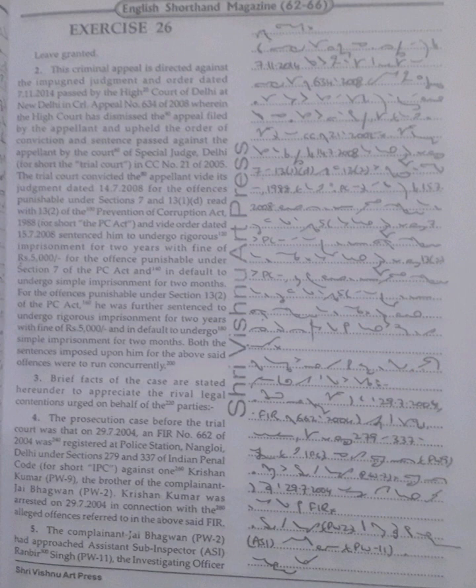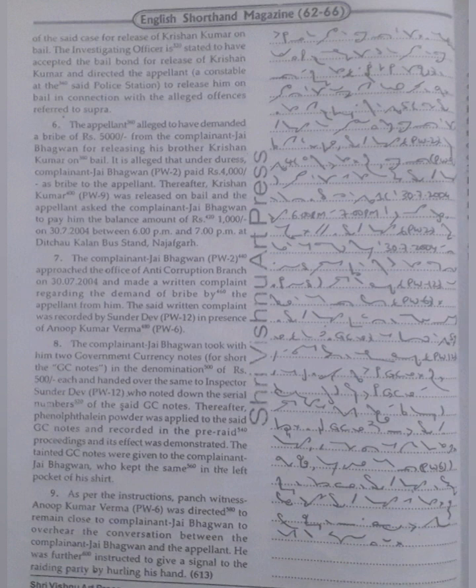The complainant Jai Bhagawan (PW2) had approached Assistant Sub-Inspector (ASI) Ranbir Singh (PW11), the investigating officer of the said case, for release of Krishan Kumar on bail. The investigating officer is stated to have accepted the bail bond for release of Krishan Kumar and directed the appellant, a constable at the said police station, to release him on bail in connection with the alleged offences referred to supra.